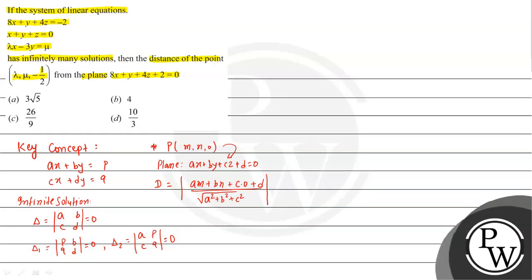Now we will solve this question. We have the equations: 8x plus y plus 4z equal to minus 2, x plus y plus z equal to 0, and lambda x minus 3y equal to mu.